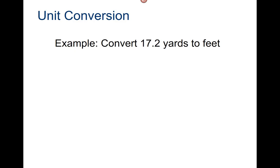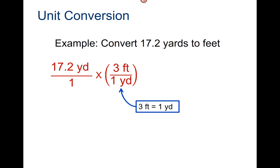Here's an example. Convert seventeen point two yards to feet. Put seventeen point two yards over one. Use the conversion factor: three feet over one yard. The yards cancel. The answer is fifty-one point six feet.